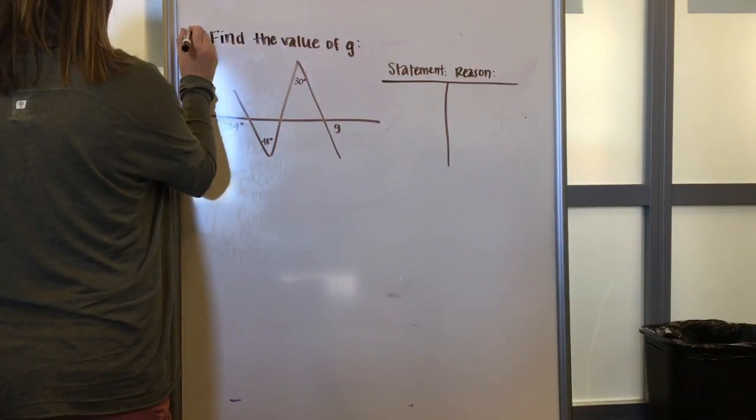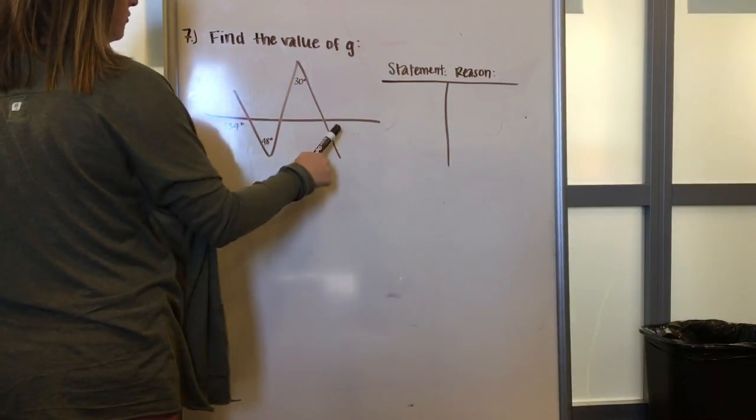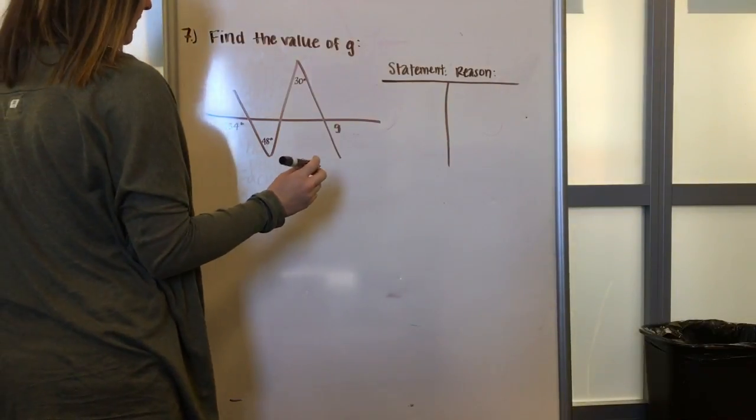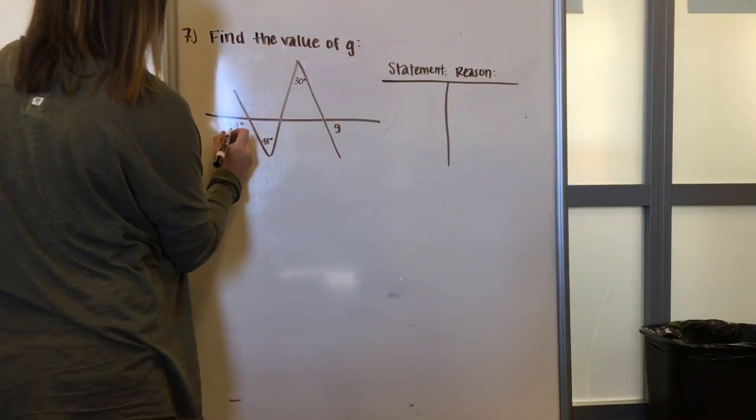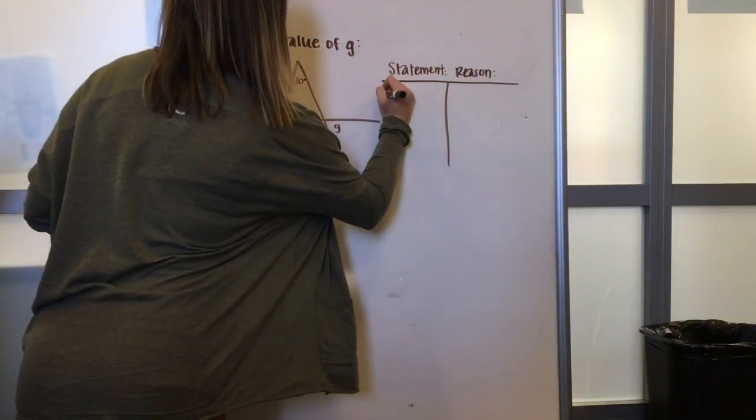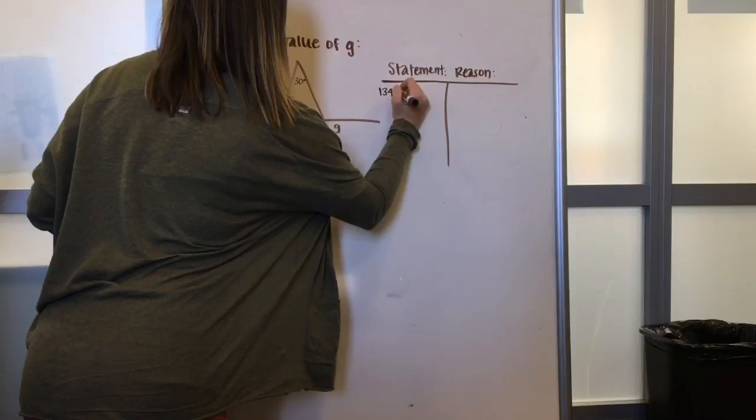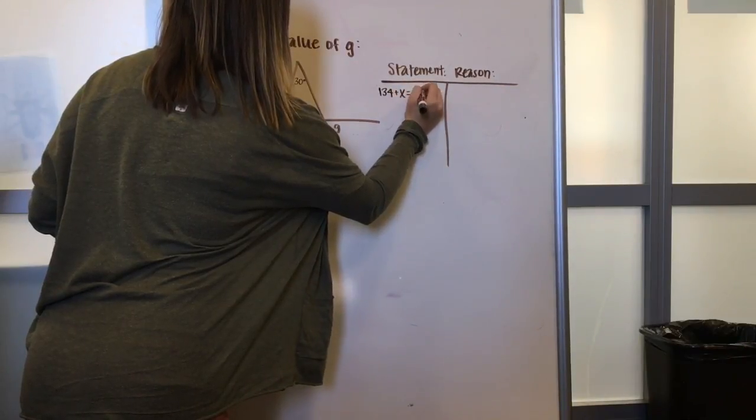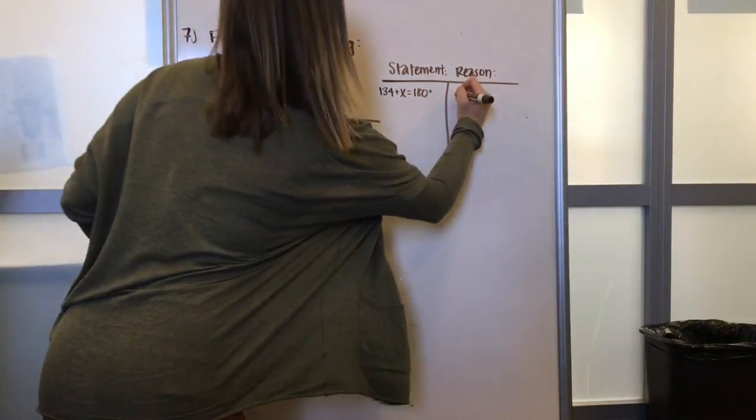Alright, for problem 7 we get asked to find the value of g. The first step we can take is we know that 134 plus some number x will be equivalent to 180 degrees. This is because of supplementary angles.